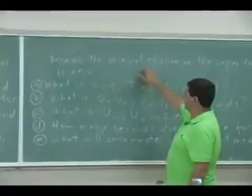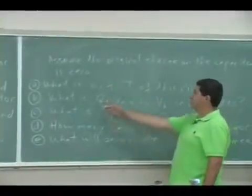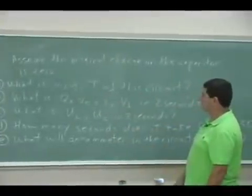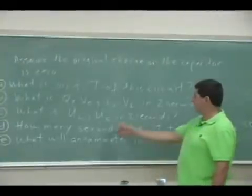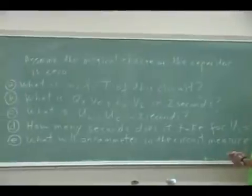I'm saying you have an inductor whose L is 9.5 millihenries, connected to a capacitor which is 0.2 microfarads, and a power supply 6.25 volts. Assume the original charge on the capacitor is zero, so that sets the initial conditions. Then we can ask: what is the radial frequency omega, the frequency f, T of this circuit? What is the q, Vc, Vl in two seconds? What is the energy Ul and the energy Uc in two seconds?